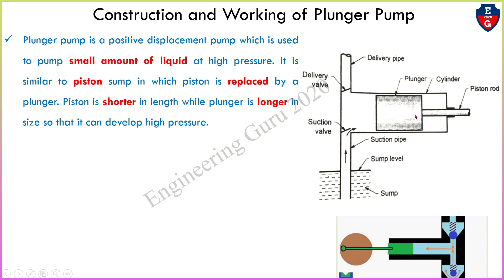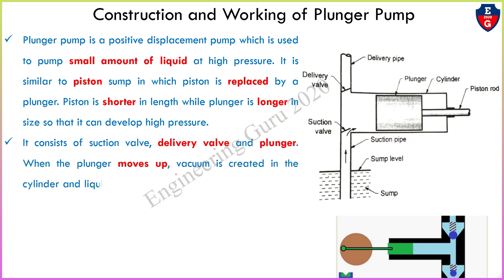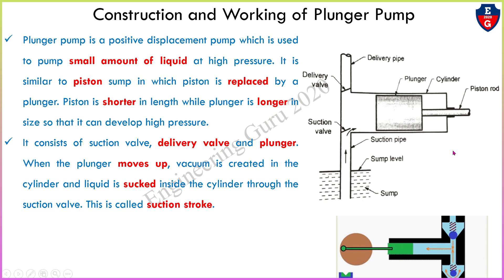This is a reciprocating type pump, so the plunger movement will be reciprocating — forward and backward, or we can say up and down. It consists of a suction valve, delivery valve, and plunger. When the plunger moves, a vacuum is created in the cylinder and liquid is sucked inside the cylinder through the suction valve.